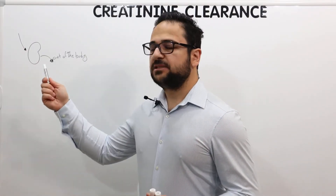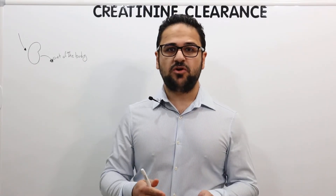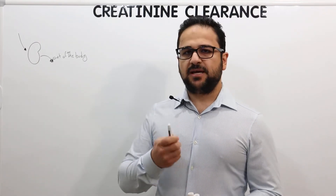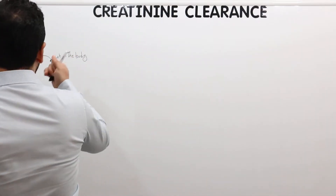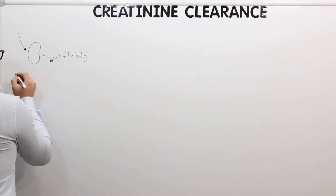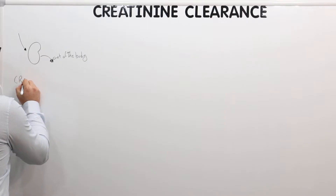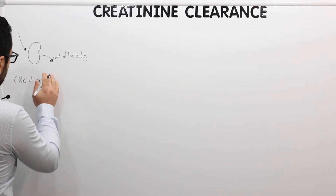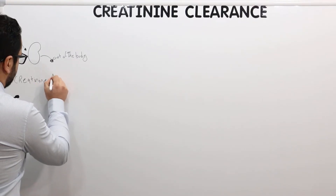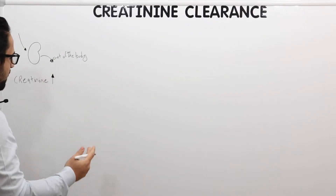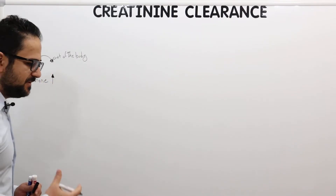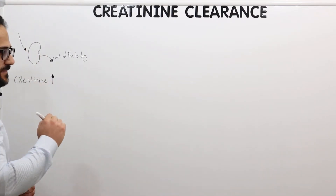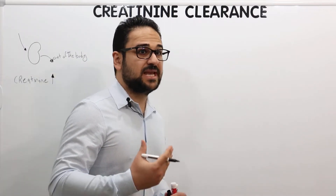We can also look into this in relation to medications that are also excreted from the kidneys outside of the body. So basically, if the kidney is not doing a good job, creatinine in the body is going to increase. Therefore, there can be accumulation, and the same thing can happen to medications that are also secreted from the body through the kidneys. So a dose adjustment to such medications will be needed.